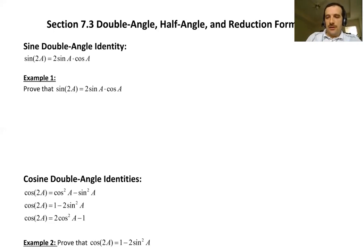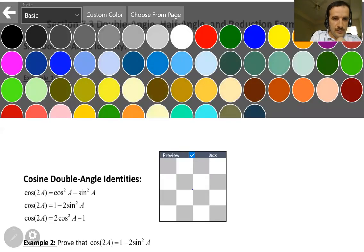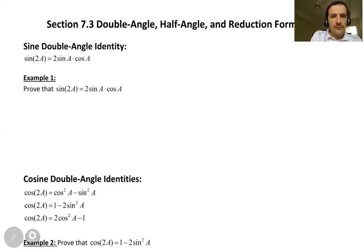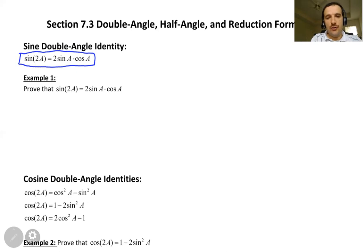Let's look at those formulas. First, double angle formulas for sine. Sine of 2A is equal to 2 sine A cosine A. And where does this formula come from? In the next example we are going to prove it. Prove that sine of 2A is equal to 2 sine A cosine A.